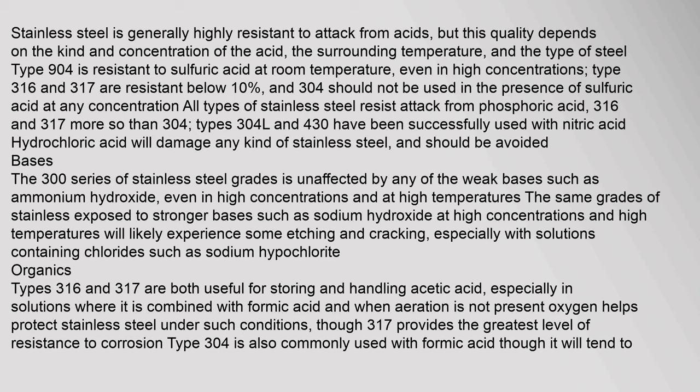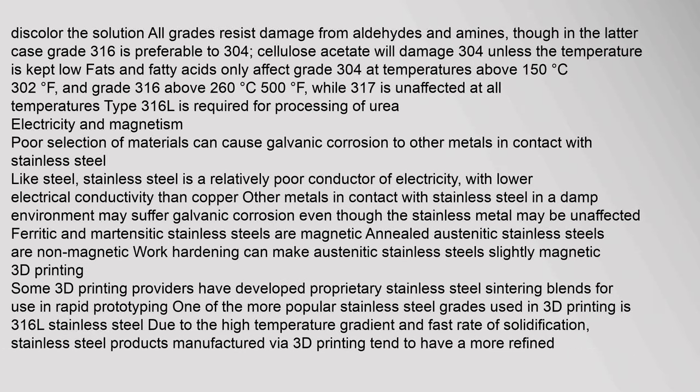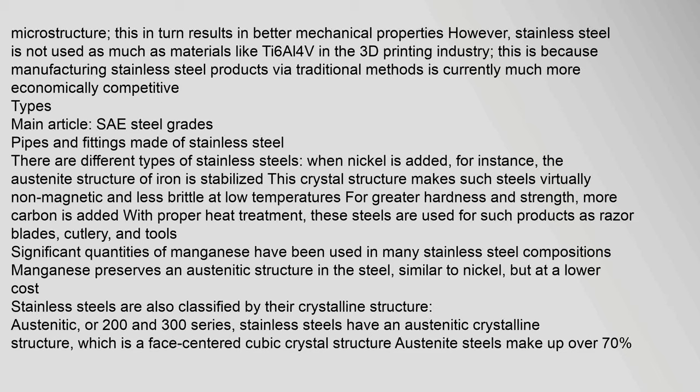The 300 series of stainless steel grades is unaffected by any of the weak bases such as ammonium hydroxide, even in high concentrations and at high temperatures. The same grades exposed to stronger bases such as sodium hydroxide at high concentrations and high temperatures will likely experience some etching and cracking, especially with solutions containing chlorides such as sodium hypochlorite. Types 316 and 317 are both useful for storing and handling acetic acid. All grades resist damage from aldehydes and amines, though grade 316 is preferable to 304 in the latter case. Cellulose acetate will damage 304 unless the temperature is kept low. Fats and fatty acids only affect grade 304 at temperatures above 150°C.